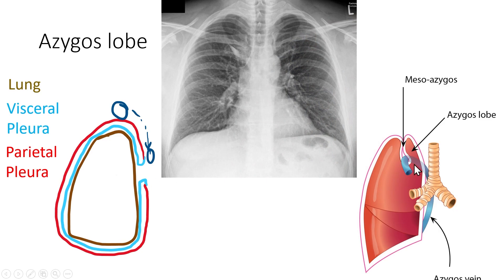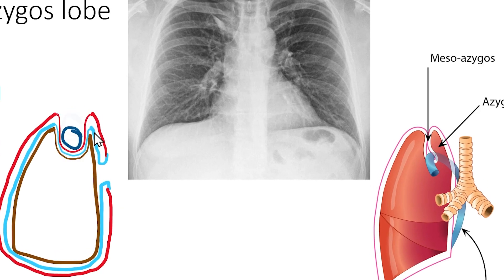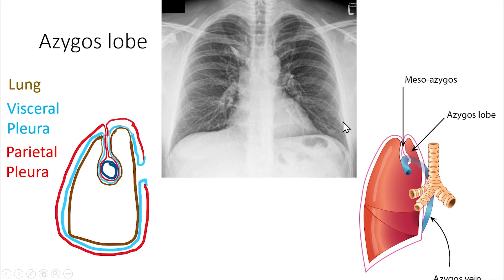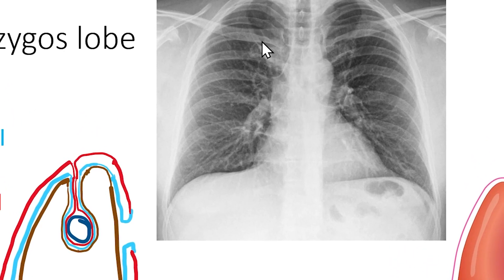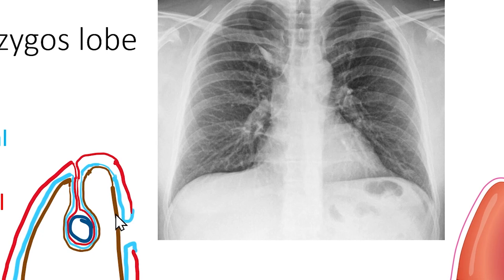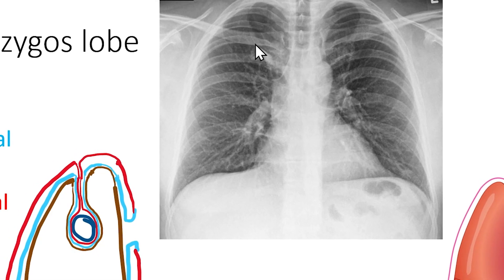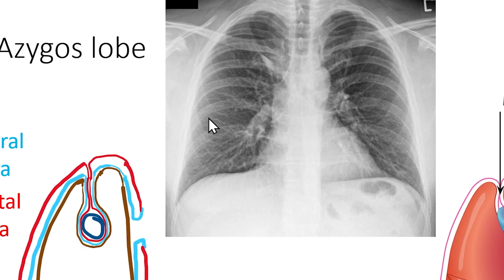But instead, in the azygos lobe, the azygos vein goes in a different direction into the lung, carrying a layer of parietal and visceral pleura along with it. This is now known as the mesoazygos. If you look carefully at this image, you can see the azygos vein, and this thin line that follows upwards is called the mesoazygos.